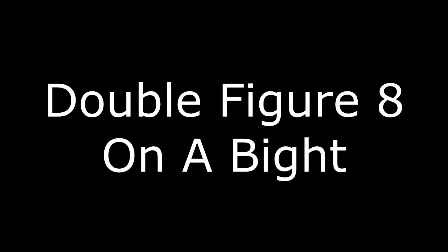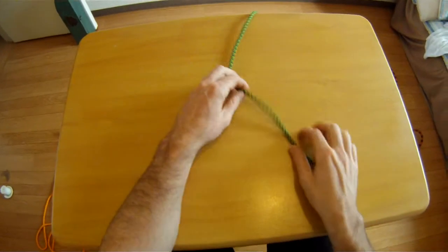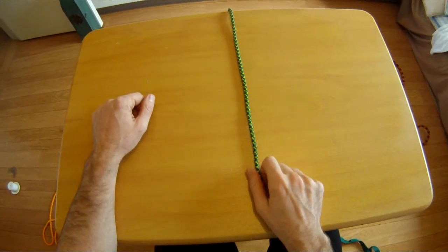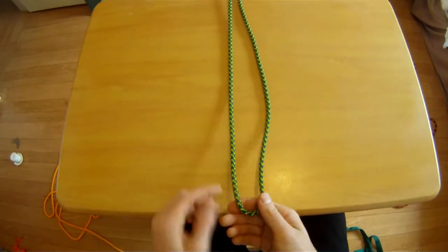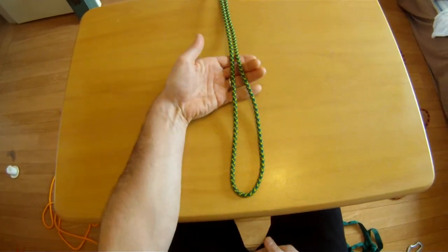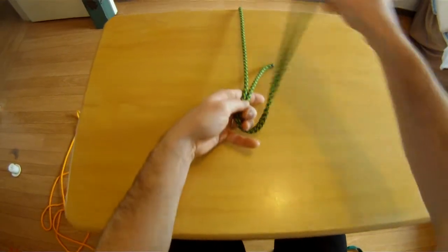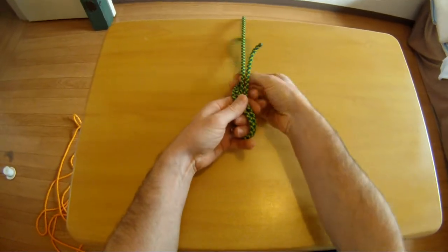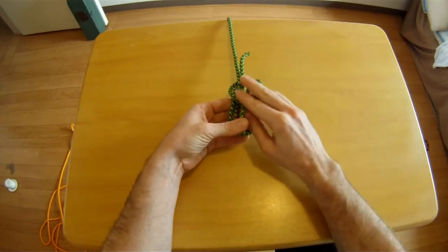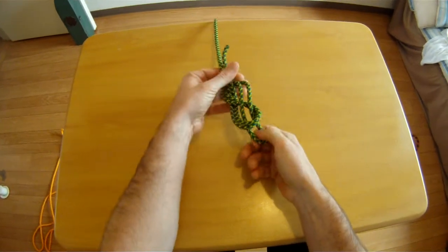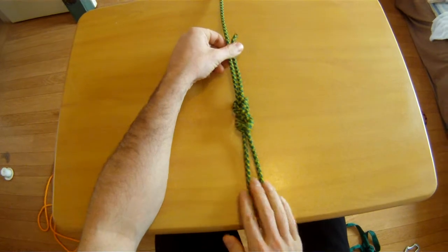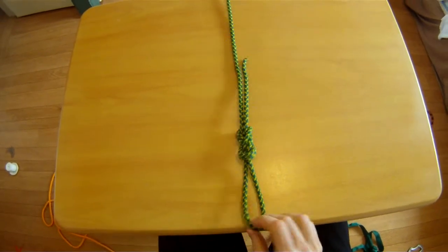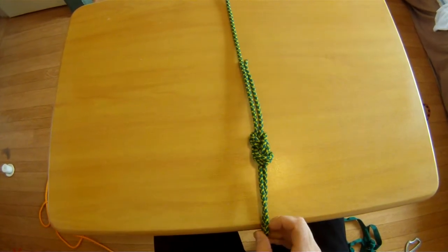The double figure eight on a bite is tied in much the same way as the first figure eight, the single figure eight. You take a bite of rope, which means folding the rope over on itself, and then treating the two pieces of rope as if it were a single rope. You just tie a figure eight knot. And now you have a double figure eight knot on a bite. This is useful when you can clip it with a carabiner.